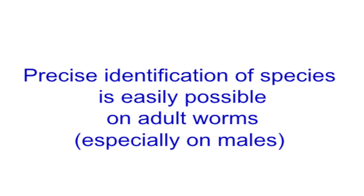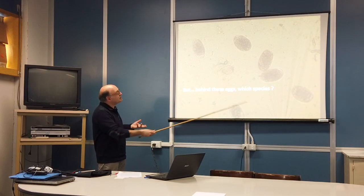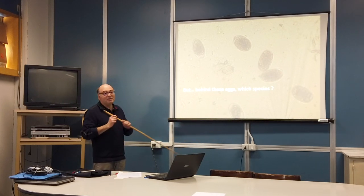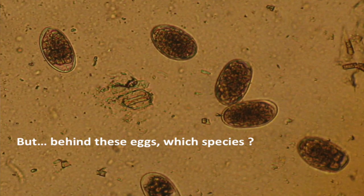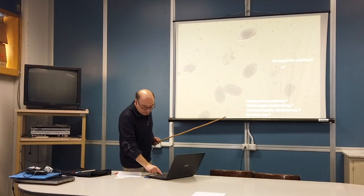Now we are speaking about eggs. Looking at eggs alone, I am not in a position to say this is an egg of Haemonchus or this is an egg of Teladorsagia. So we need larval culture. Sometimes with Nematodirus it's easy to distinguish, but among Teladorsagia, Trichostrongylus, and others, it's not possible from eggs alone.